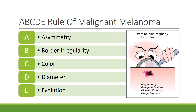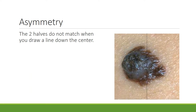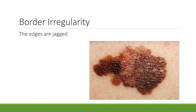In the next few slides you'll be looking at the ABCDE rule of malignant melanoma — characteristics used by dermatologists to classify melanomas. The A stands for asymmetry, meaning the two halves do not match. If you were to draw a line down the middle in any direction, the two halves would not be identical. The B stands for border irregularity, meaning the edges are jagged and not smooth, as you can see in the picture.